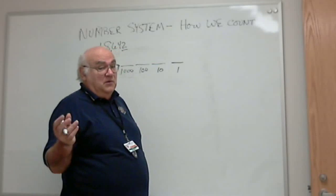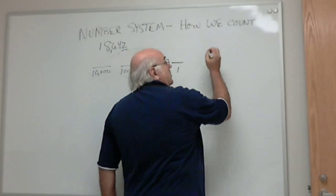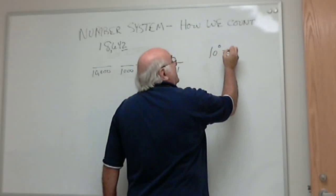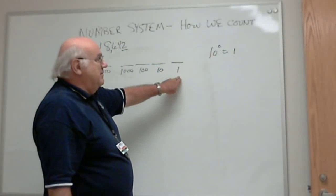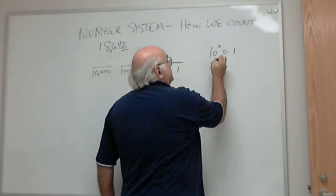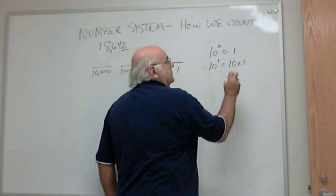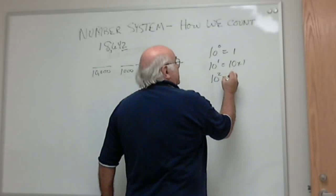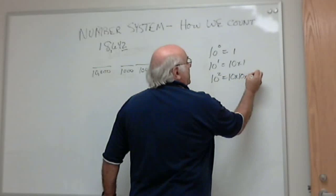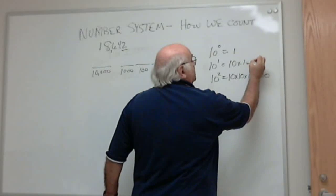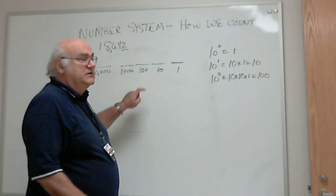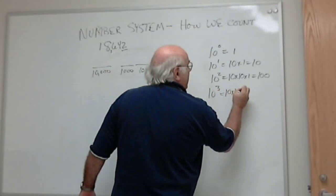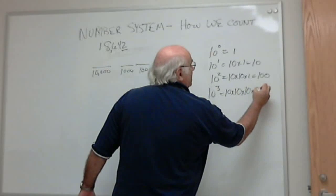So now we've got to get into a little bit of math — just a little, I'm not going to go too deep. We're going to get into exponents; this is how we can describe it. 10 to the zero power equals 1 — that's that position. 10 to the first power equals 10 times 1, which is 10. 10 to the second power equals 10 times 10 times 1, equals 100 — that's the hundred position.